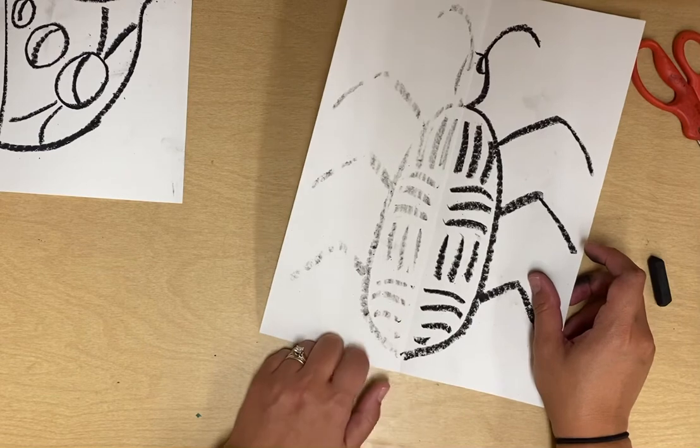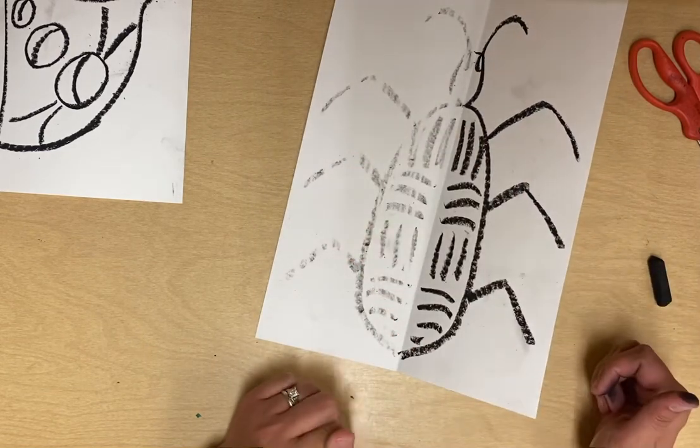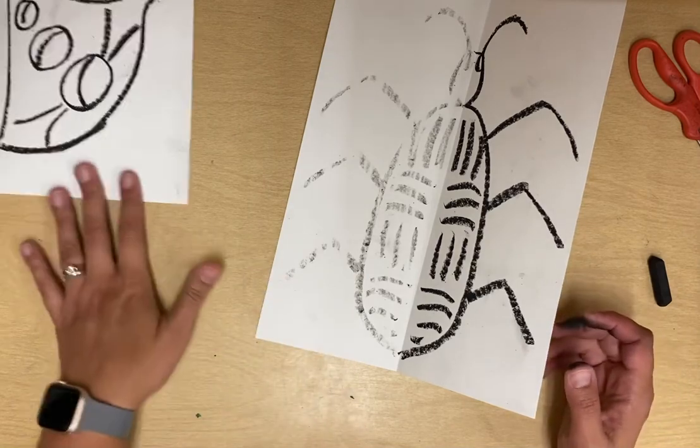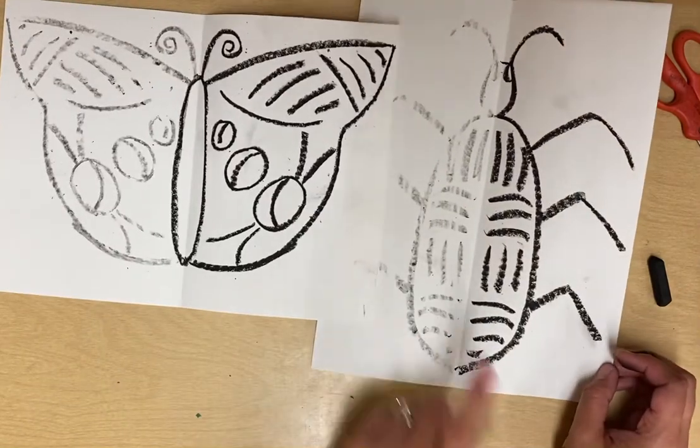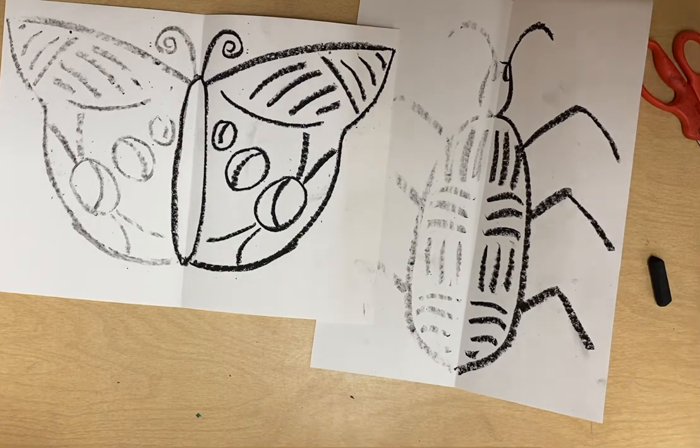Trace the other side and then you'll have a symmetrical bug. I'll give you a baby wipe for your fingers. The key is to draw big and then trace - that's all you have to get done today. Next week we will paint. Have fun!